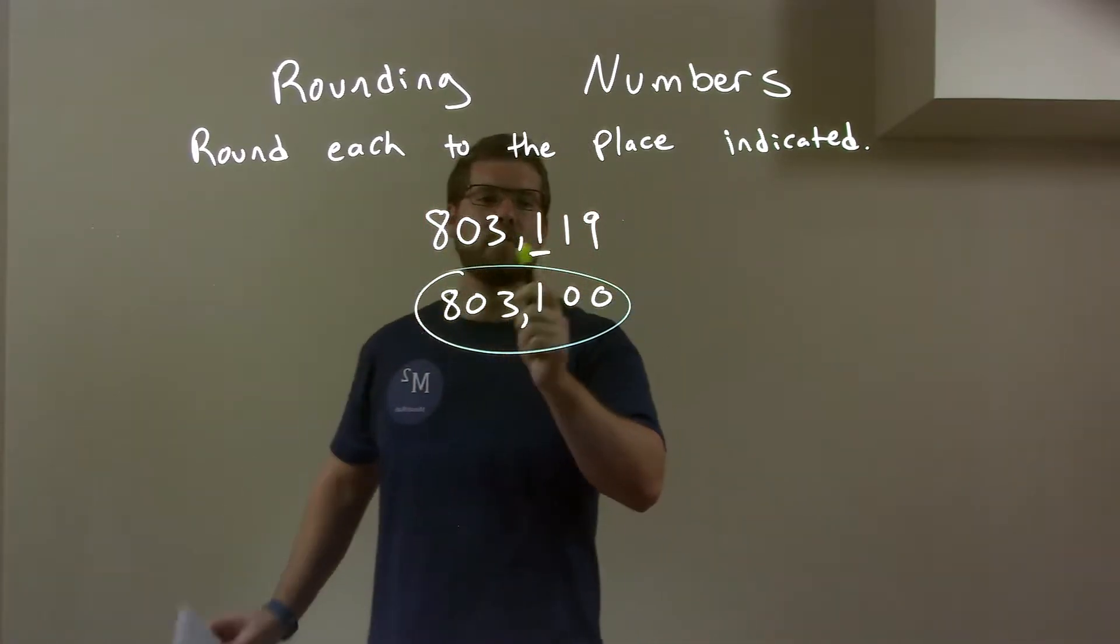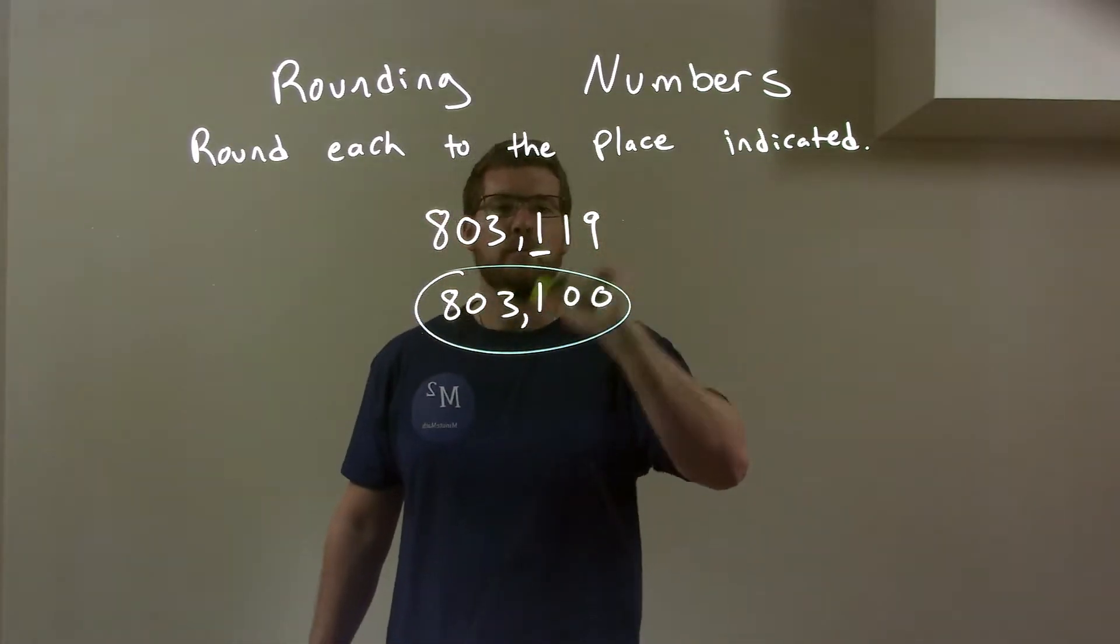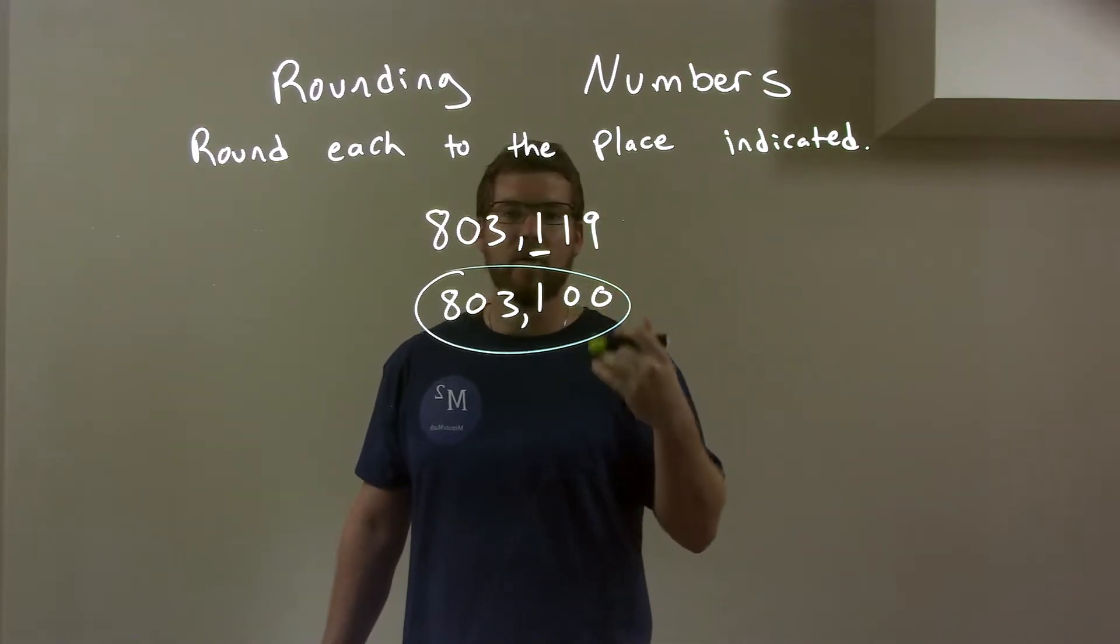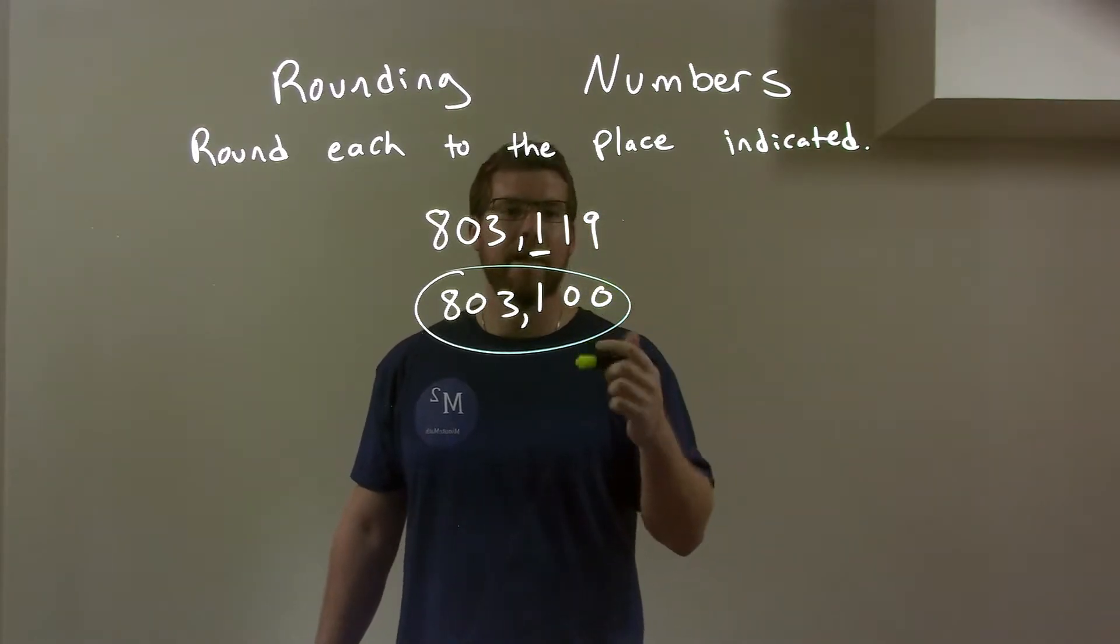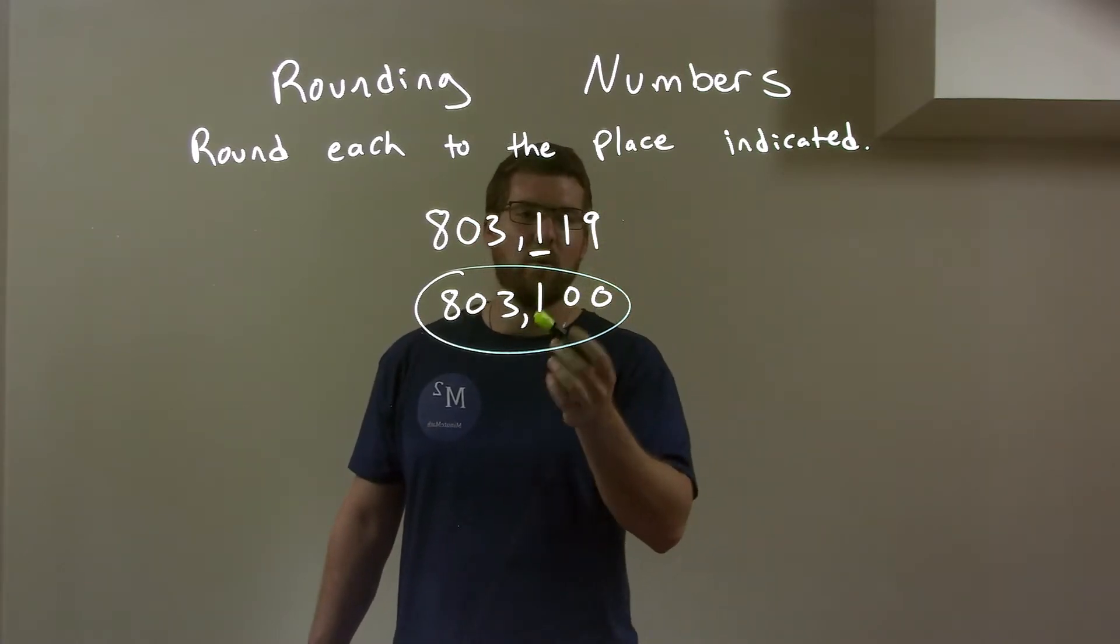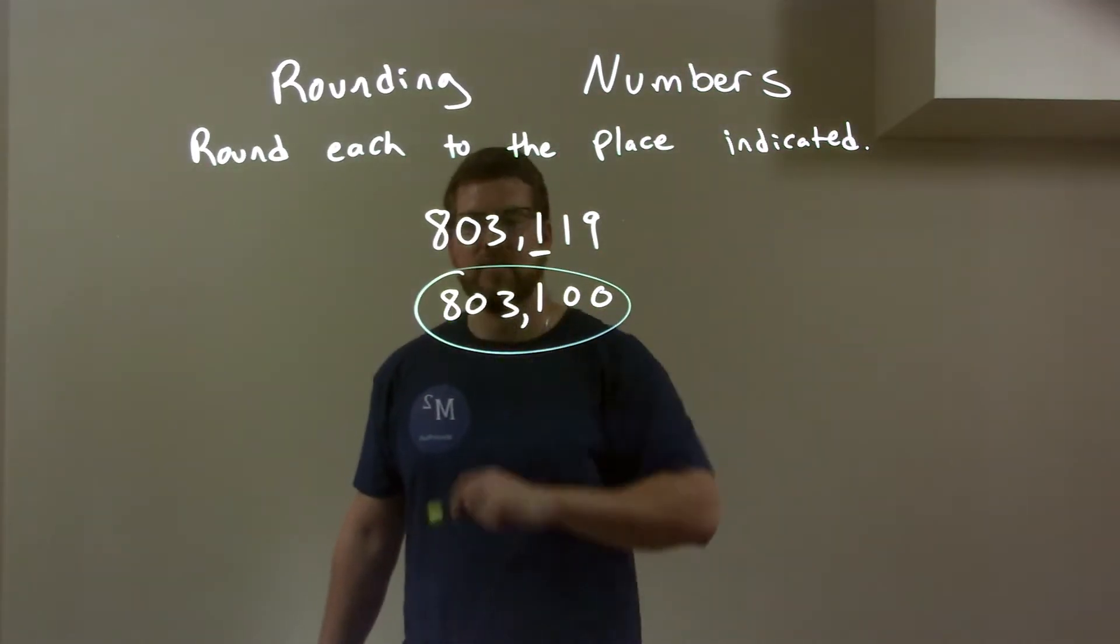So quick recap. We're given 8, 0, 3, 1, 1, 9, and we need to round on this 1. The 1 to the right of it is just a 1, right? And it's in the category from 0 to 4. Well, since it's in there, we round down. This one stays at 1, the rest of it brings down zeros. Bring this down the same.